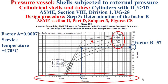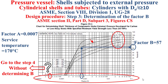It's important to note that when factor A falls to the left of the applicable temperature material line — for example, a factor A around 0.4×10⁻⁴, as highlighted in red — it is impossible to determine factor B using the same methodology. In this case, we must go directly to step 4 without determining factor B. For tabular values of factor B, see the tables CS in ASME Section 2 Part D Sub Part 3.